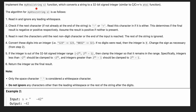Hi everyone, it's Sorkin. Today we have a problem where we are given a string s and we need to convert that to a 32-bit integer, similar to C and C++'s atoi (ASCII to integer) function.